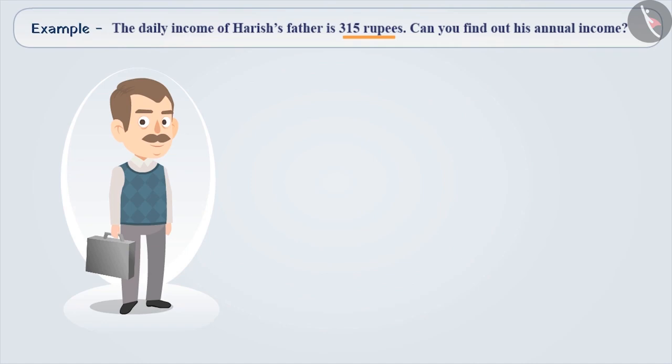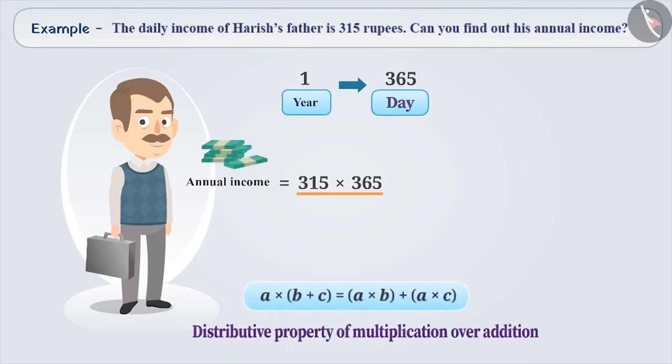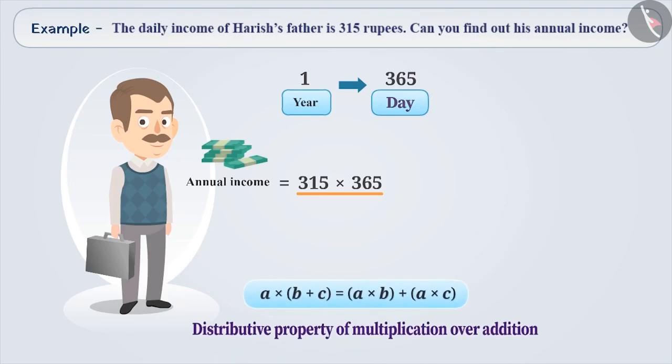We have to find out what his annual income is. We know that there are 365 days in a year. Hence, his annual income will be 315 into 365. Finding the product of these two values seems difficult, but when we apply the distributive property of multiplication over addition, we can solve it easily.